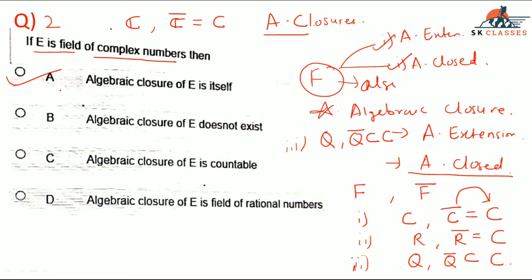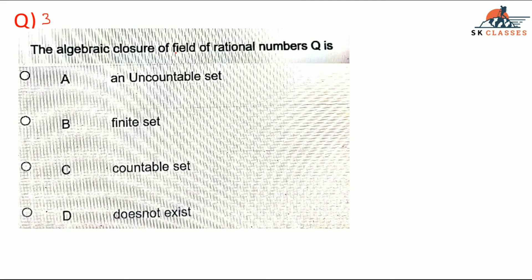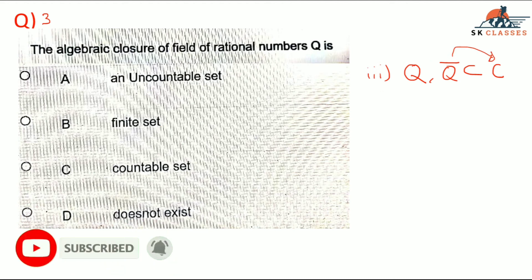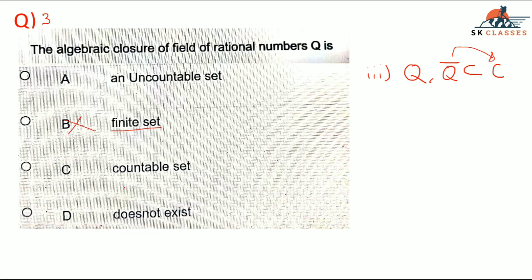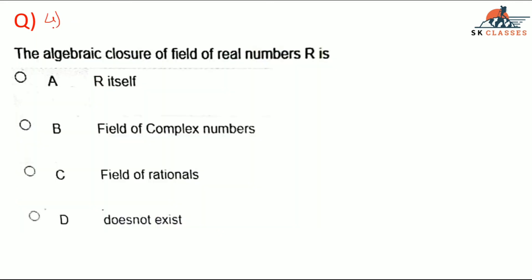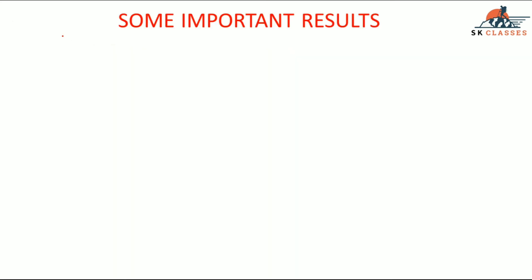Question 3: The algebraic closure of the field of rational numbers Q is — as I mentioned, that is our third condition. The algebraic closure of Q is a set properly contained in C. Options (a) and (c) remain; I'll leave this as homework — comment your answer below. Question 4: The algebraic closure of the field of real numbers R is the set of complex numbers, so the answer to question 4 is (c) — field of complex numbers.